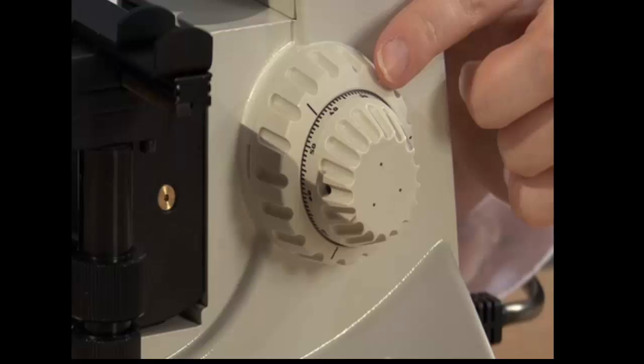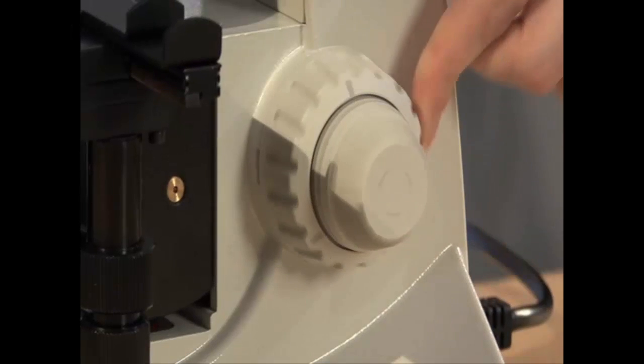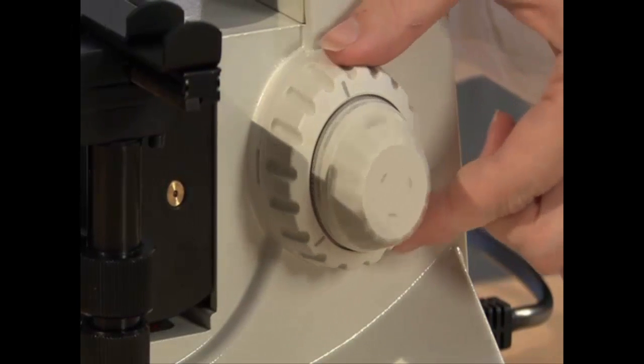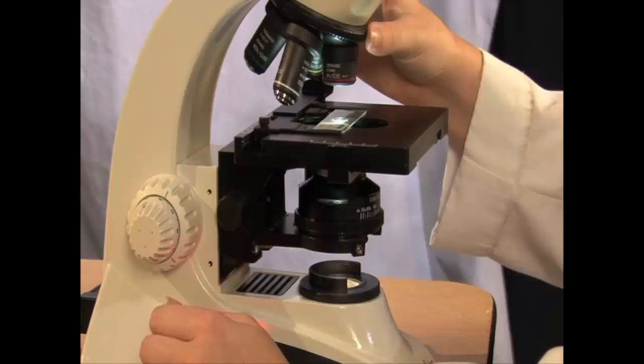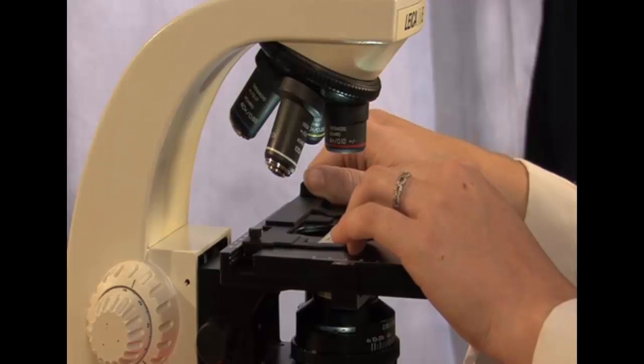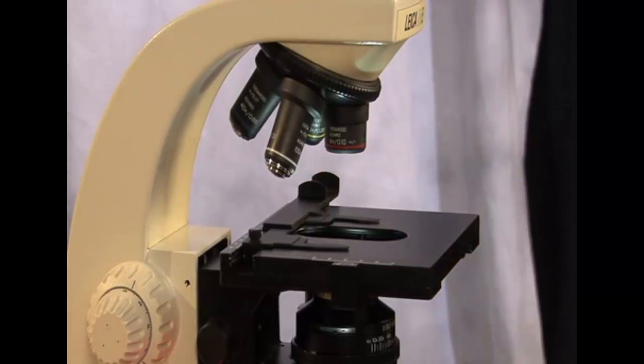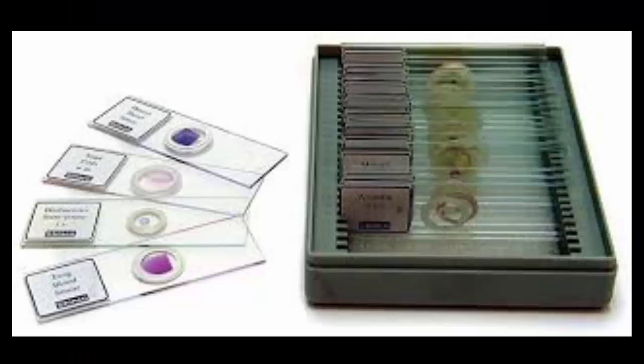Now, let's say we have finished viewing this specimen and we are ready to view another. Simply use the coarse adjustment knob to lower the stage to its lowest position and then rotate the objectives back to the scanning power. Squeeze the slide clips and remove your slide. It is important that you put your slide back into the slide box immediately.